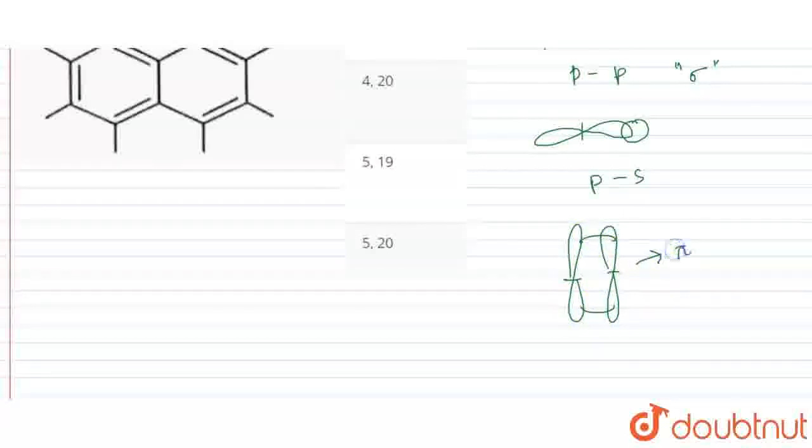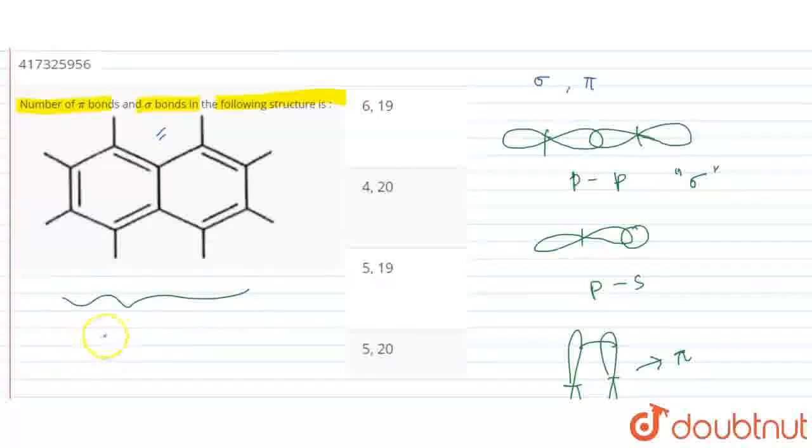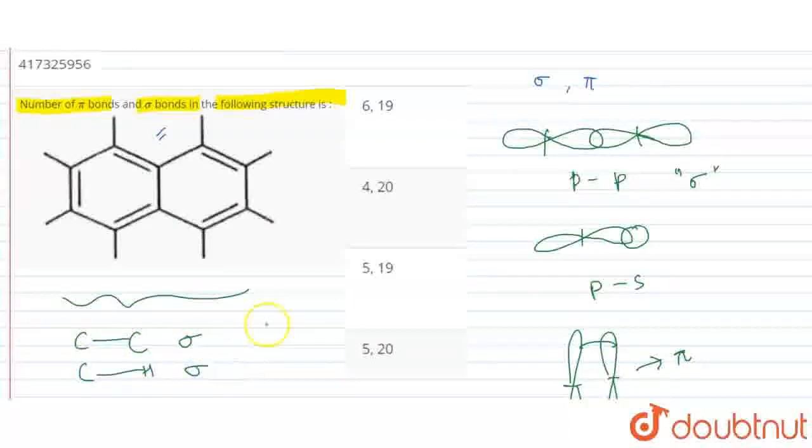Overlapping side-ways, overlapping pi bond. Tell me how much sigma and pi bond in this particular molecule. When C and C are single bond then it is sigma bond. C and H bond also is sigma bond. But when C double bond, one sigma, one pi. Triple bond, one sigma two pi. Between two particular atoms, one sigma bond possible.